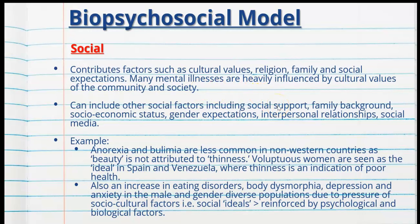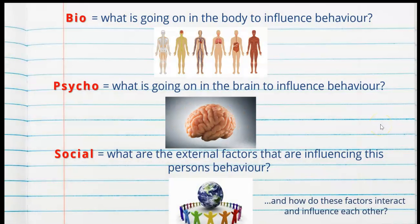Everything we look at in this course is through the biopsychosocial model — whether it's an illness, a treatment, a behaviour, etc. To keep it simple: bio is what's going on in the body to influence behaviour, such as dopamine, hormones, sleep, stress, fight-or-flight, drugs and alcohol. Psycho is what's going on in the brain — universal processes interpreted differently by each person, such as memory, learning, perception, cognition and emotions. Social is the external factors influencing behaviour, such as social media, friendship groups, family upbringing and culture.